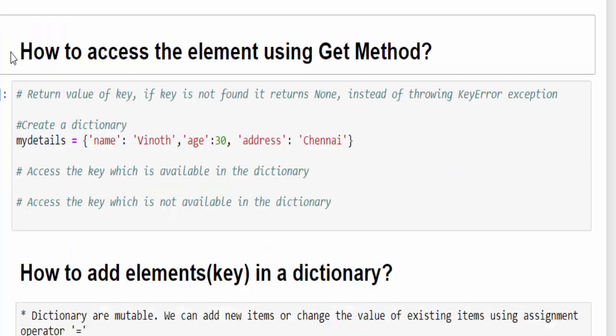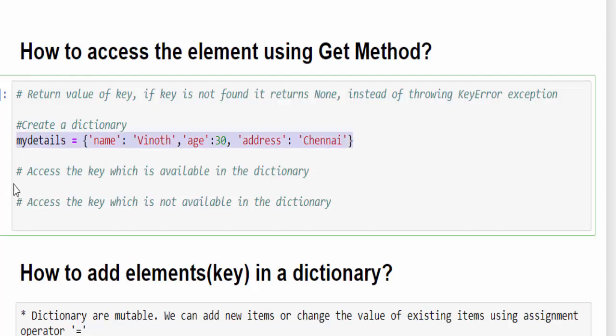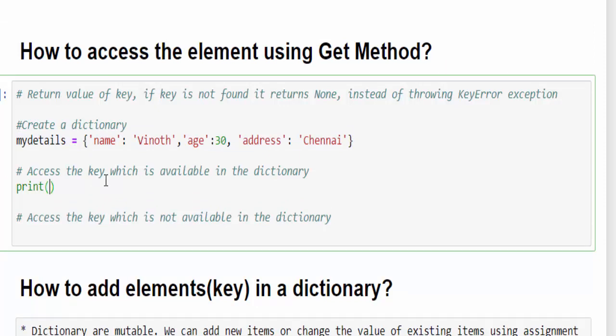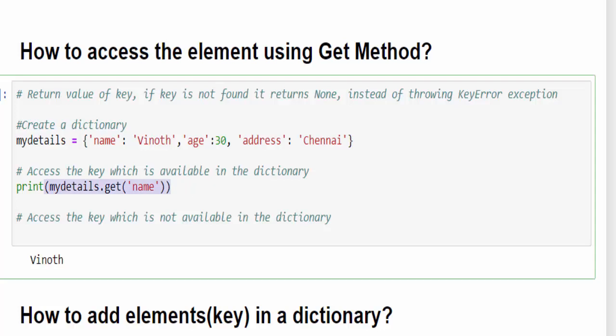We can also access the element using the get method. One big advantage of using get method is in case if the key is not in the dictionary variable, we will not get the key error. Instead, we will get the none value. When you want to access an element, always use the get method for the safer side. Same example, positive scenario first. Print variable name dot get, mention name. Run it. Using get method, we can access the key and value.